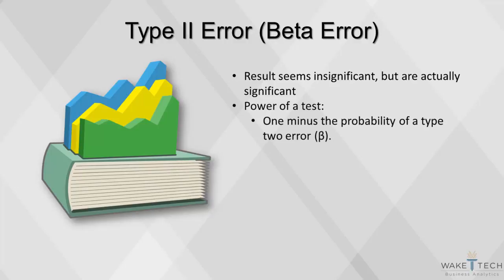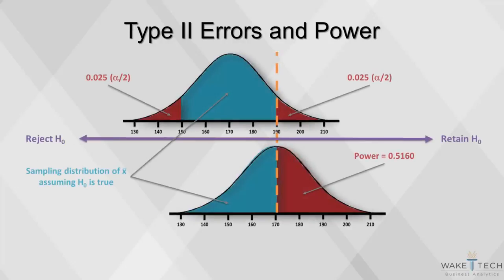The power of a test is 1 minus the probability of a type 2 error. It is the probability of rejecting the null hypothesis when the alternative hypothesis is true. In these competing sampling distributions, alpha is set to 0.05. The bottom curve assumes HA is true, and the top curve assumes that the null hypothesis H0 is true. Its right tail shows that we will reject H0 when a sample mean exceeds 189.6. The probability of getting a value greater than 189.6 on the bottom curve is 0.5160, corresponding to the power of the test.